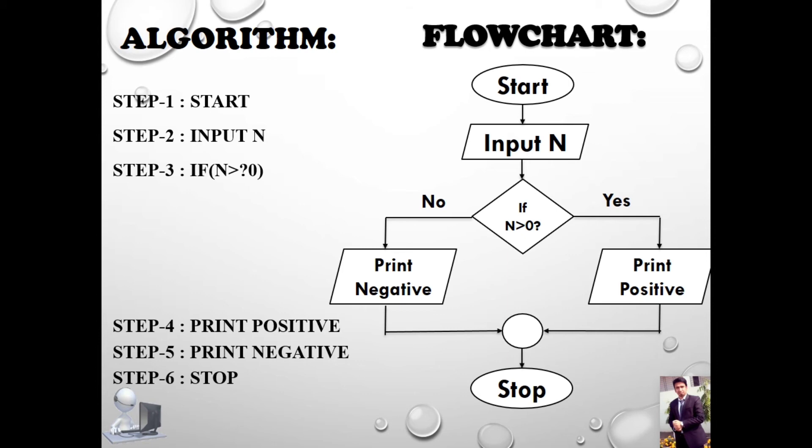...five, Print negative. Here in step three, you can see if N is greater than zero, then there are two conditions: one is yes and the other one is no. If yes, then go to step four. If no, then go to step five. And finally, step six: Stop. So this is our algorithm and flowchart to find out whether a number is positive or negative.